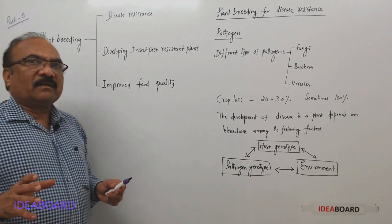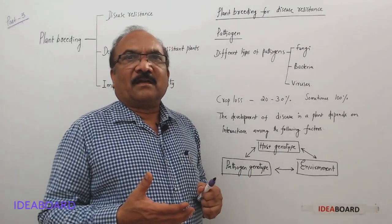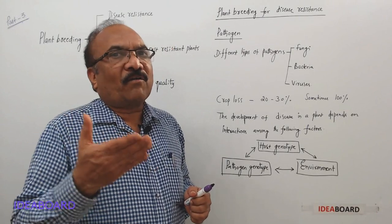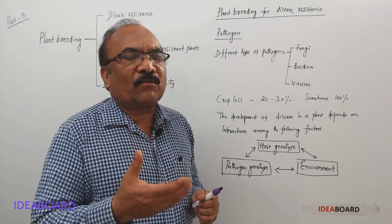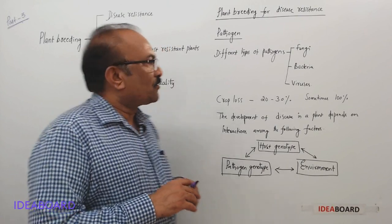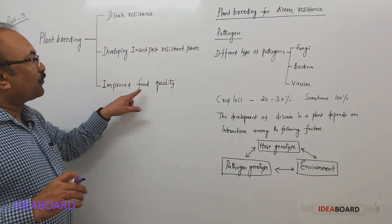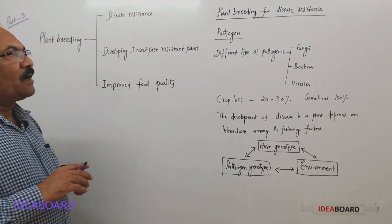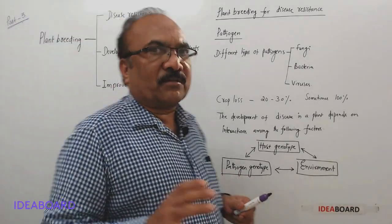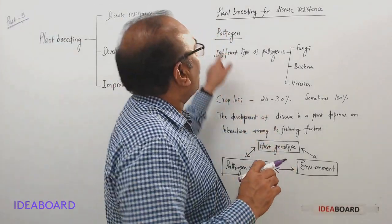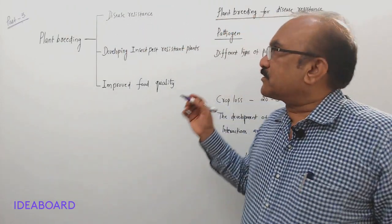And even if we are getting a good yield, and if the quality is poor, then it is of no use. That is why improved food quality matters. In this video, we will discuss the first one, which is plant breeding for disease resistance.